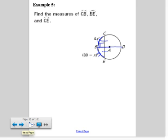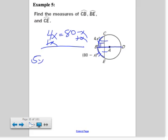These two pieces have to be the same. Therefore, 4x has to equal 80 - x. Add x to both sides: 5x = 80. Divide both sides by 5, so x equals 16.